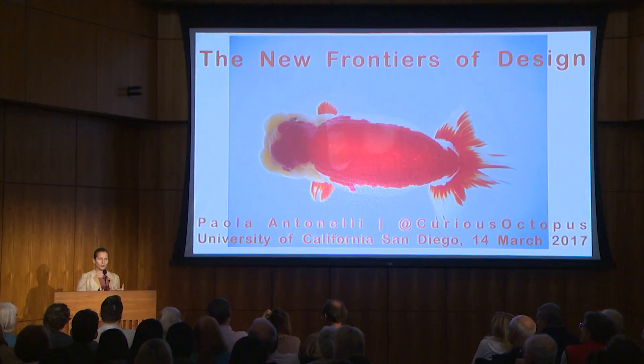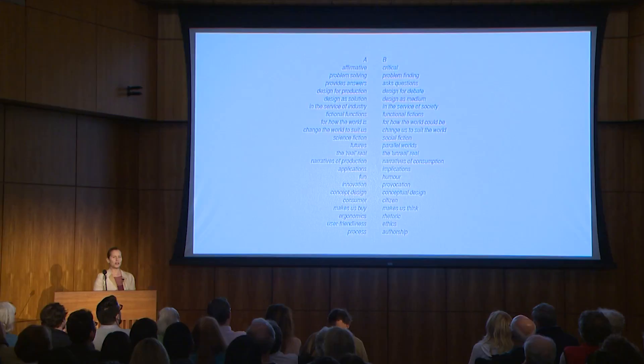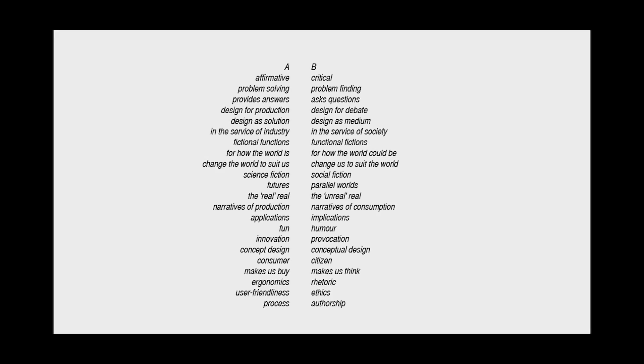Today we were thinking of how many labels the world wants to give different forms of design. Instead I'm going to talk about design by attitudes and show how these attitudes range all over many different types of design. The first slide I'm going to show is one I borrowed from my friends Tony Dunn and Fiona Rabie, who are considered the parents of speculative design. Speculative design is a branch of design that thinks of the possible consequences in the future of our choices today.